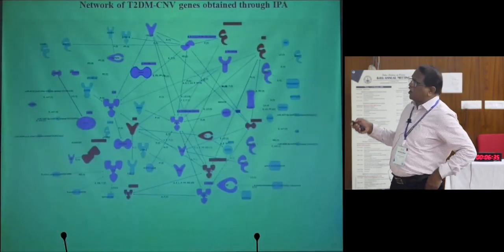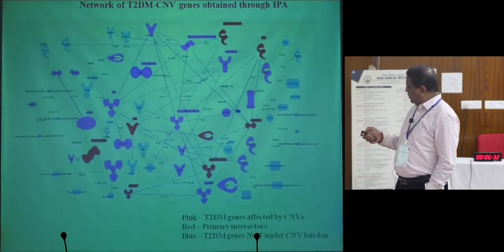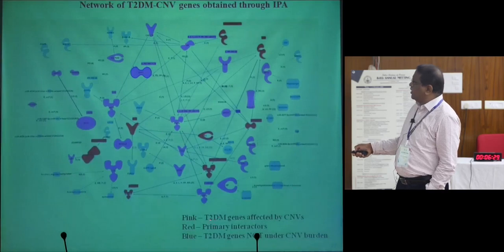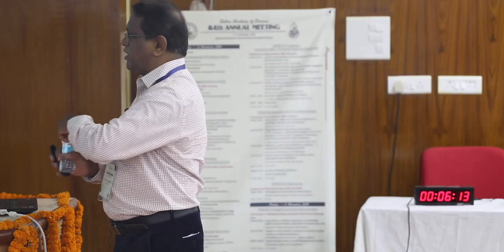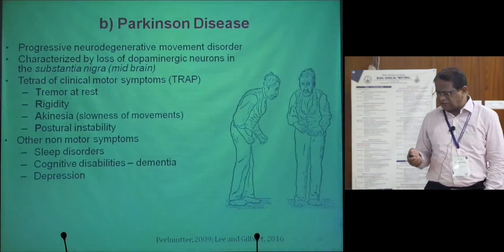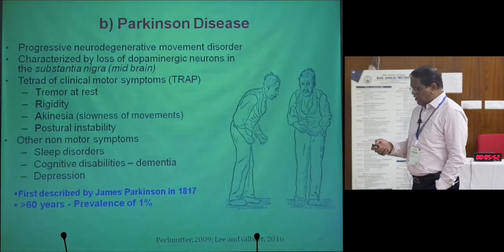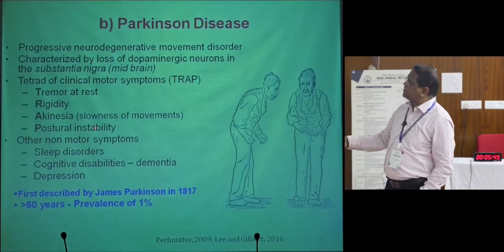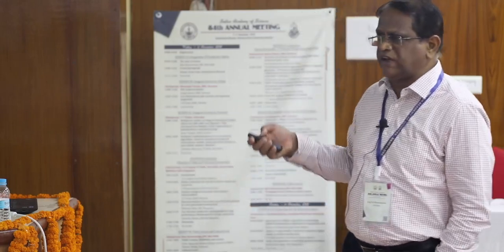We identified the IPA pathway — shown in pink — where pink indicates type 2 diabetes-affected CNVs, primary red shows the primary hit, and blue shows type 2 diabetes genes not under CNV. The pink genes are where we identified our CNV. In summary, 83 genes, CASC and associated genes were identified. We also analyzed Parkinson's disease, which has a prevalence of about 1 percent above 60 years of age. One PhD student is working on Parkinson's disease, performing transcriptome and other analyses.